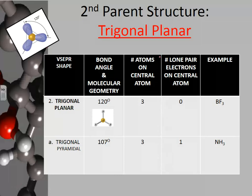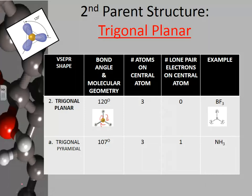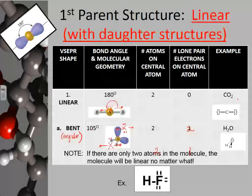The next parent structure is trigonal planar. With trigonal planar, you have three atoms on the central atom and no lone pairs, with a bond angle of 120 degrees all the way around. An example would be boron trifluoride, BF3. I wouldn't expect y'all to draw the structure so it literally looks trigonal planar — it's fine if you draw BF3 in a simpler way. Of course, redrawing it correctly would be great, but I wouldn't expect you to.